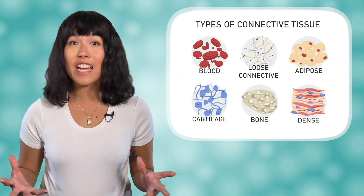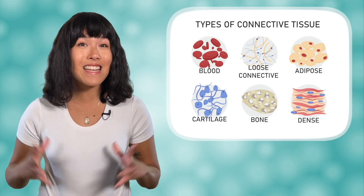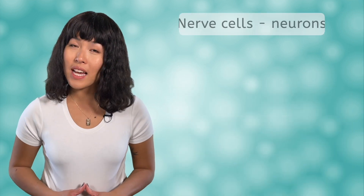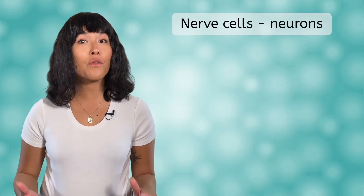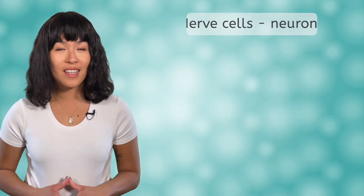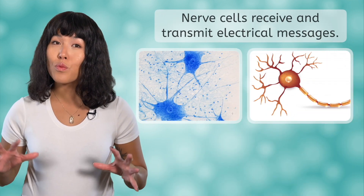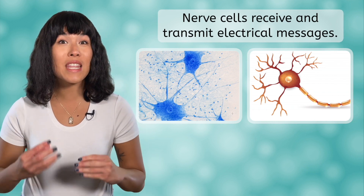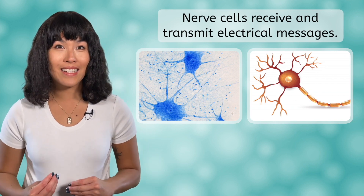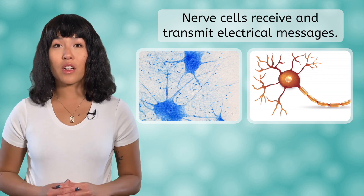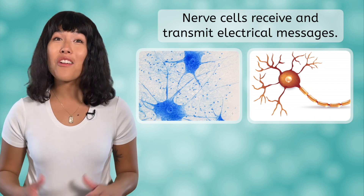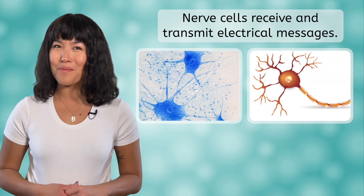Our final type of cell is the nerve cell, or neurons. These cells receive and transmit electrical messages within the body. They have a very unique structure that we will study in more detail in our nervous system lesson.